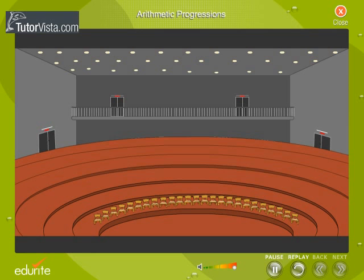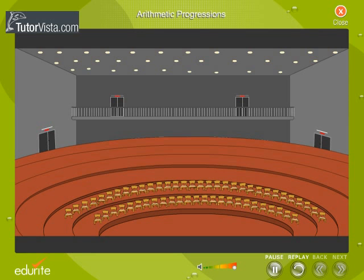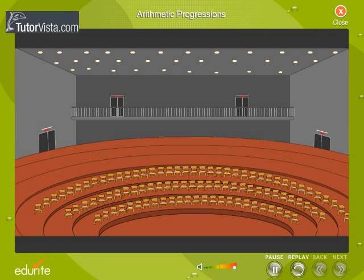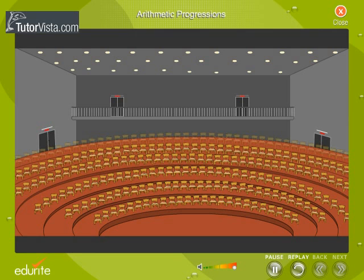The second row has 7 more seats than the first row. The number of seats in each succeeding row increases by a fixed number 7. How many seats will be there in the tenth row? How many rows will the auditorium need so that the capacity is 1110 people?